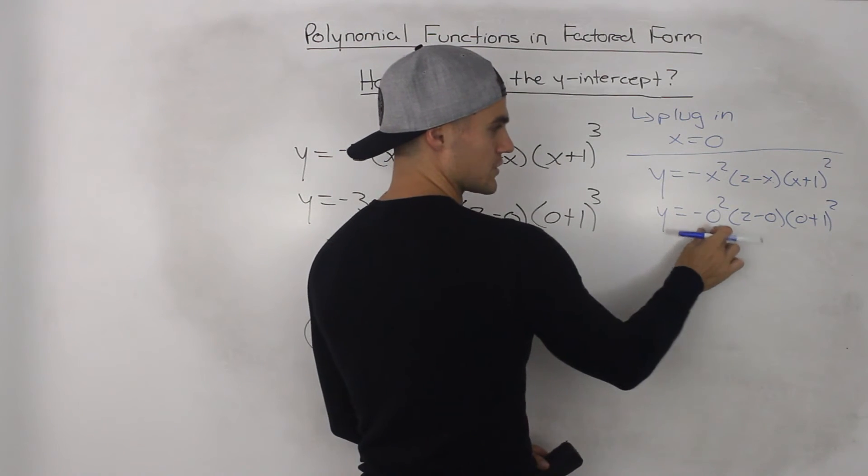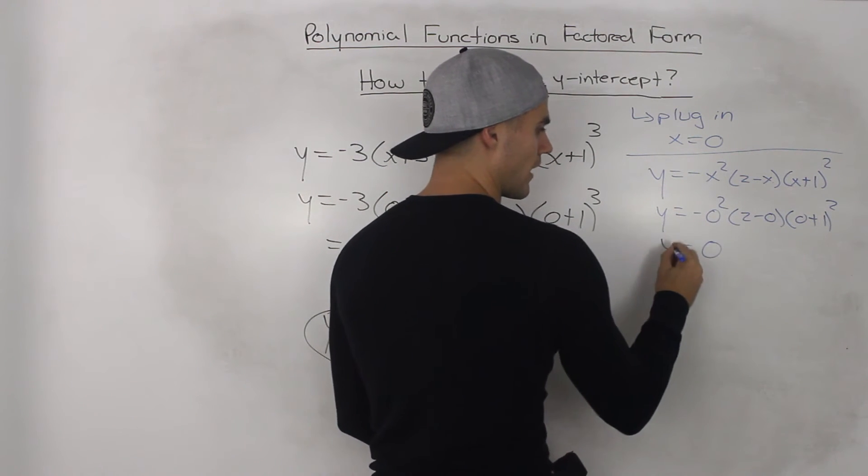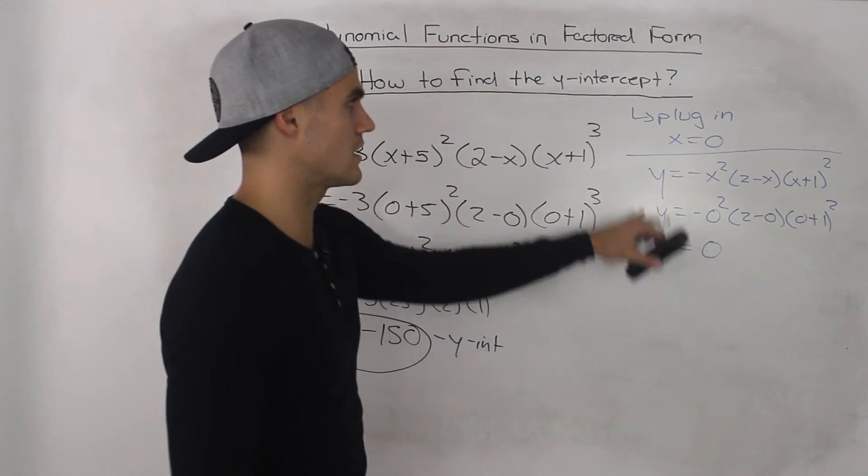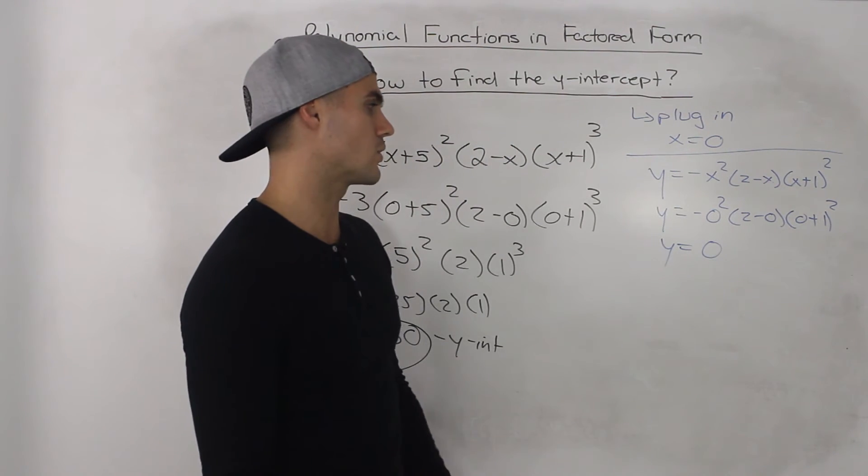And then notice how this 0 is going to make the whole thing 0. So we know that the y-intercept is 0. This polynomial function is going to go through the origin.